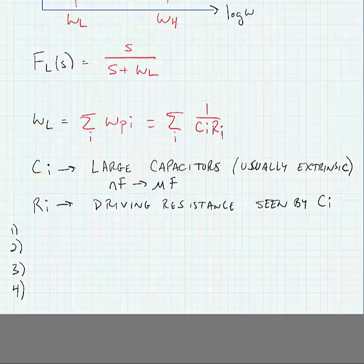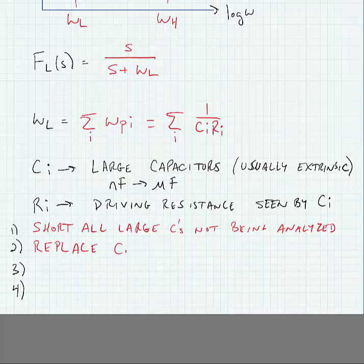So, in our short circuit time constant analysis, what we're going to do is we're going to short all large capacitors that aren't being analyzed. We're going to replace the C being analyzed, in other words CI, by a test voltage source. We're going to measure the current that flows from that test voltage source to figure out what RI is.